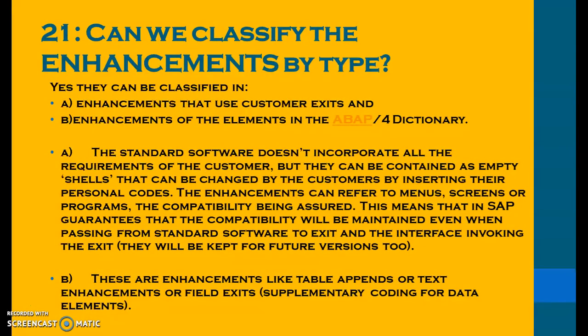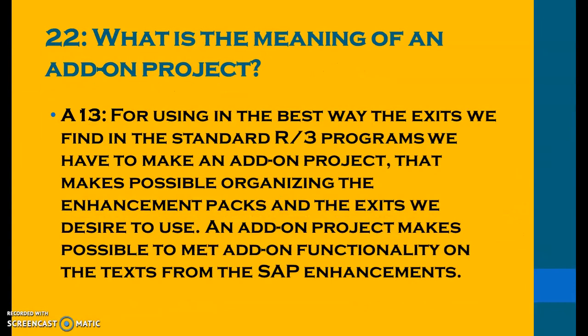Can we classify enhancements by type? Yes. First type: customer exits — enhancements of user-defined functionalities and elements in the ABAP dictionary. The standard software incorporates empty shells that can be changed by customers by inserting their personal code. Enhancements can refer to menus, screens, or programs, and compatibility is guaranteed even when passing from standard software to an exit. Second type: table appends, text enhancements, field exits, and supplementary coding for data elements.